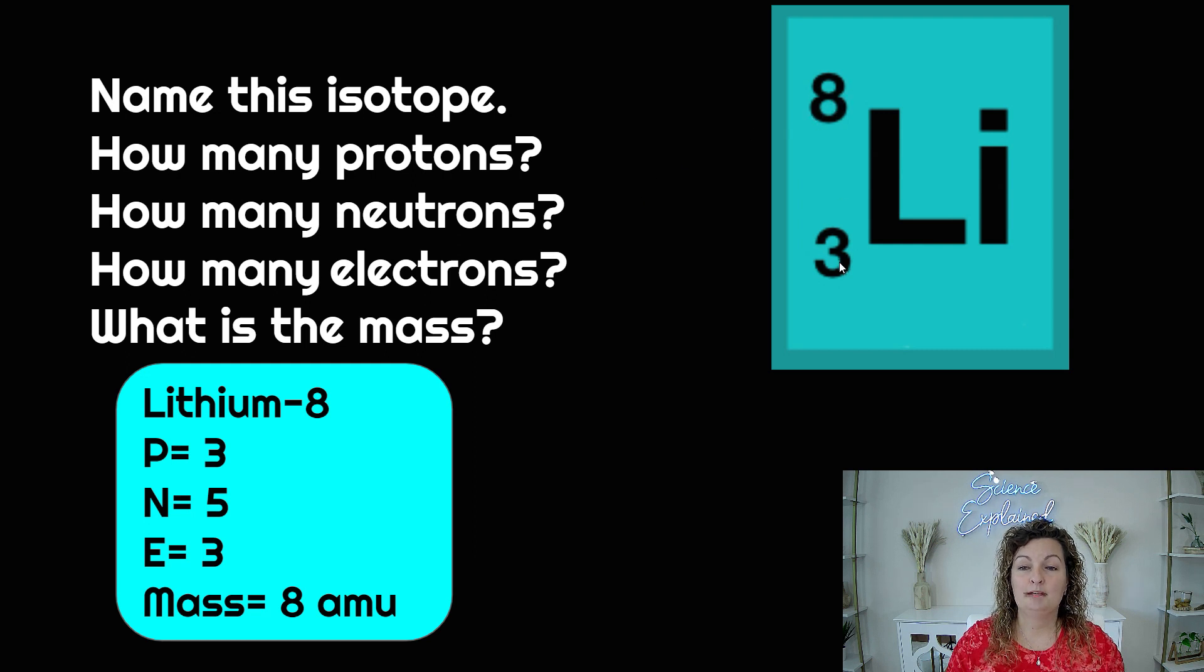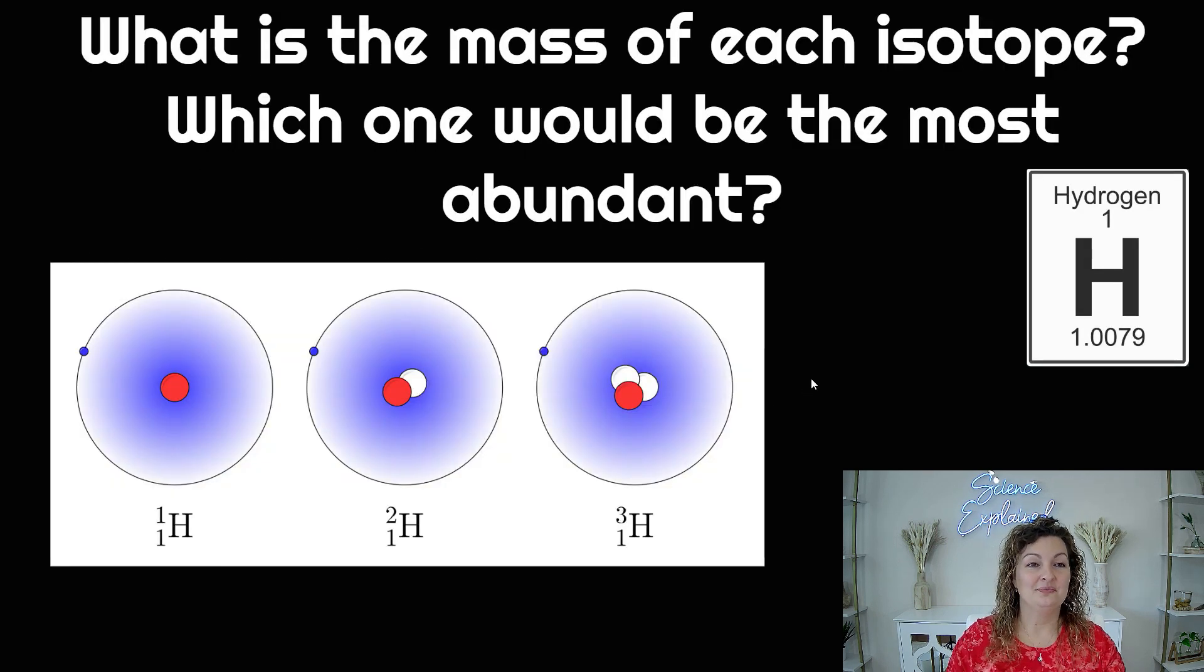We need to find or calculate the number of neutrons. So atomic mass, eight minus protons, three, and that's going to be five neutrons. Double check: five plus three equals eight. We're good to go. And then our electrons are going to be still equal to protons since we do not have a written charge here. So that's going to be three. And our mass is eight amu.